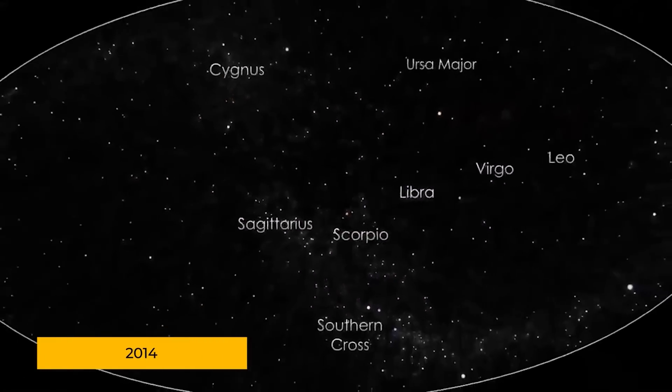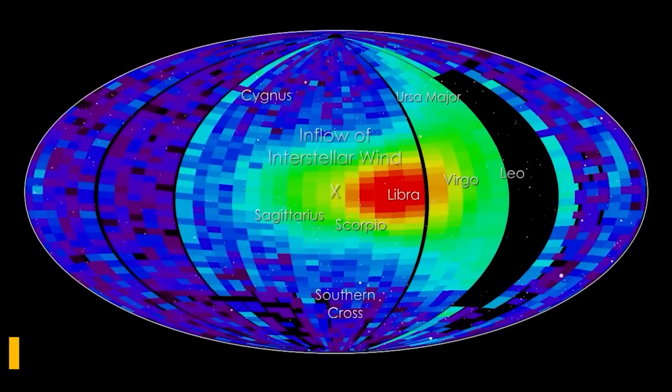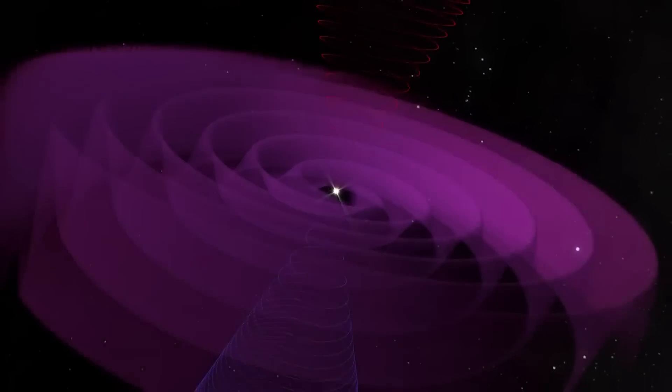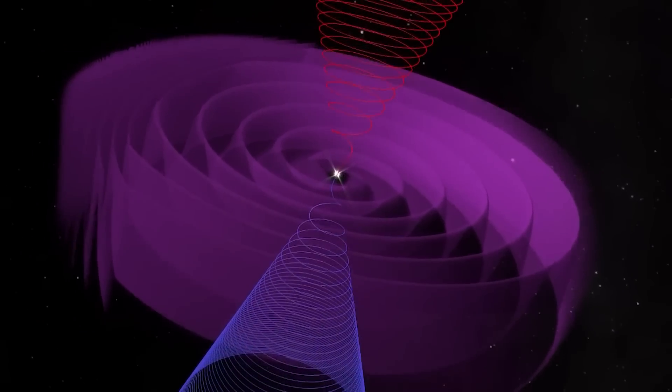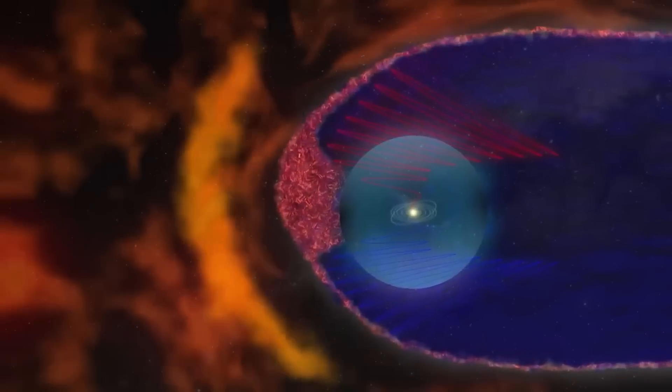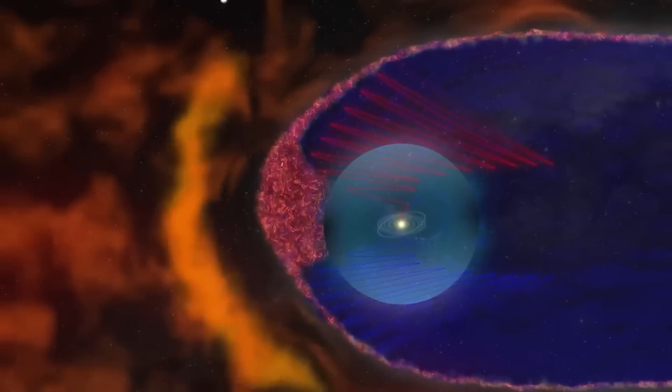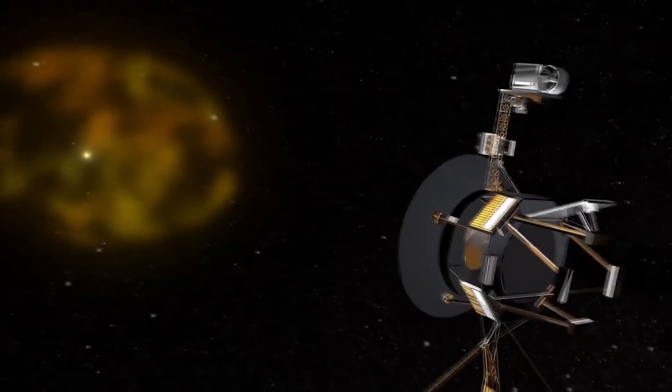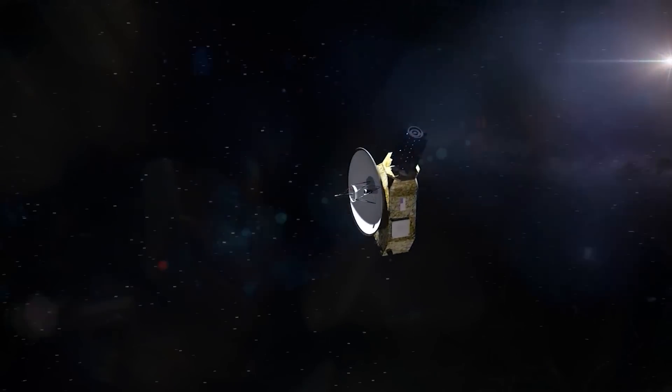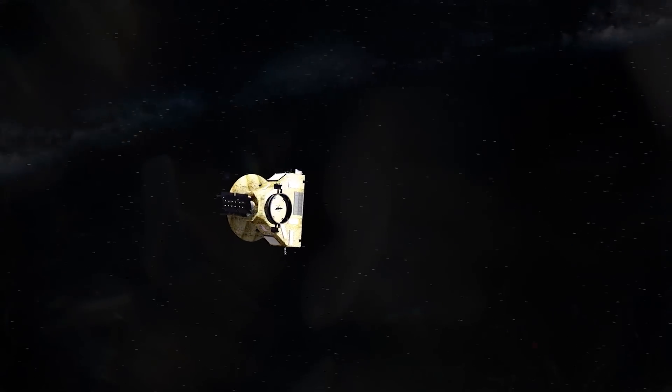In 2014, IBEX recorded an unexpected brightening of ENAs, indicating that the heliopause might be lopsided, contrary to what models predicted. Further investigation revealed that the heliopause had moved significantly in a short span of time, which explains the large gap between Voyager 1's and Voyager 2's entries into interstellar space.